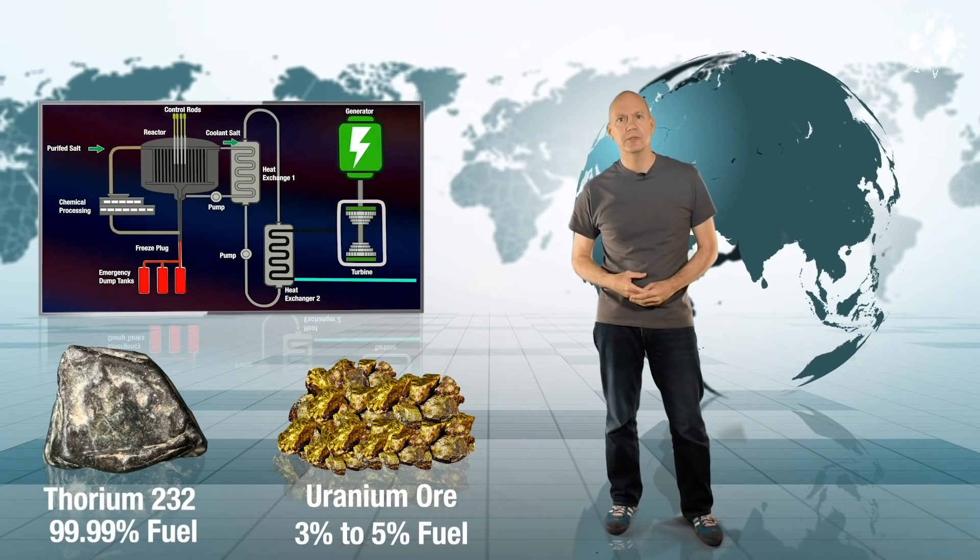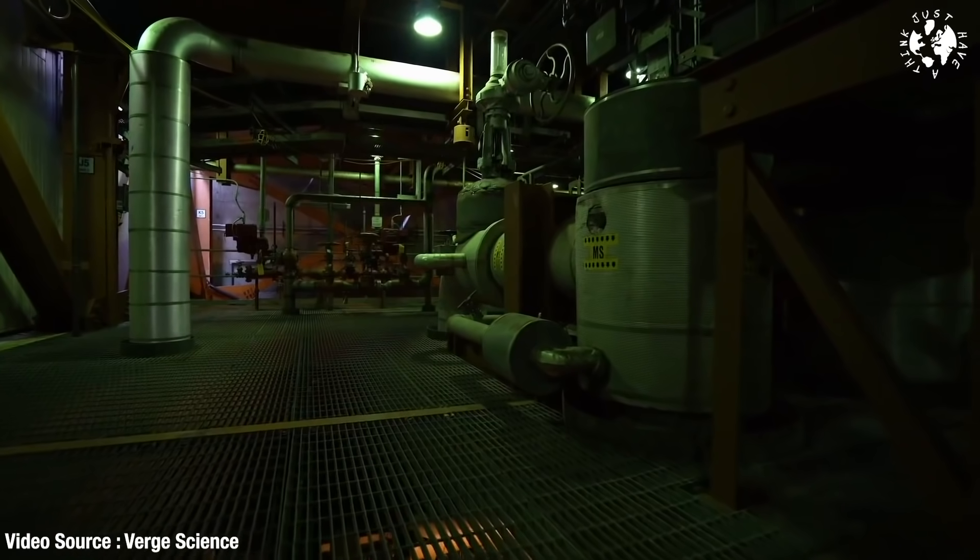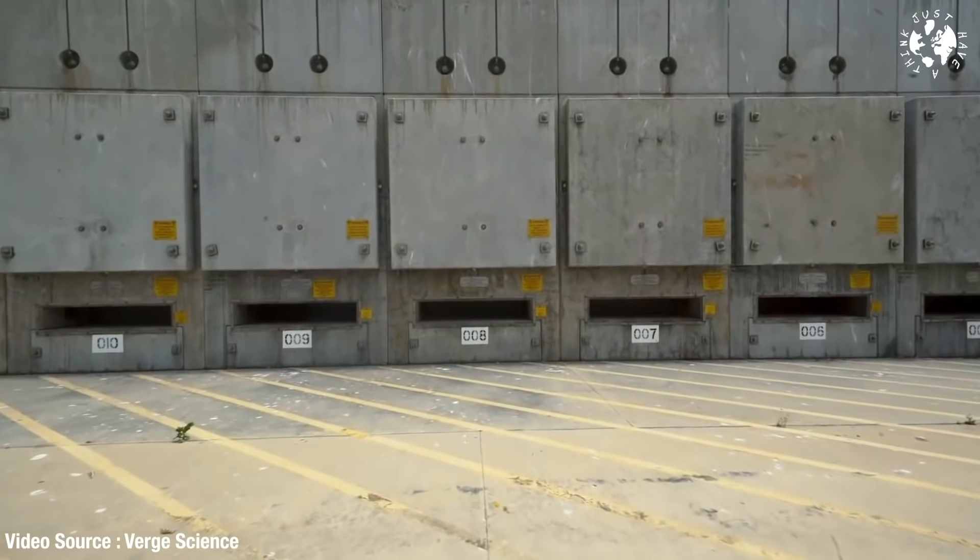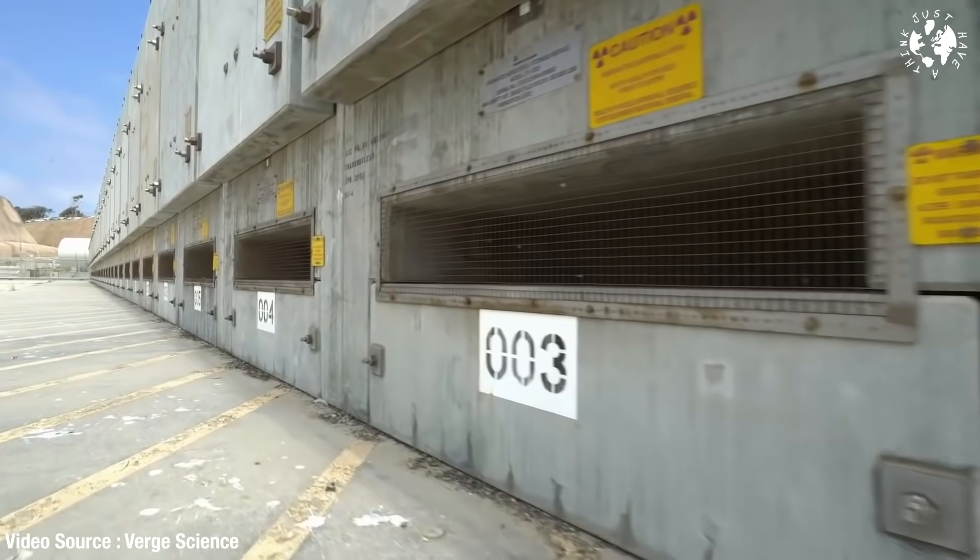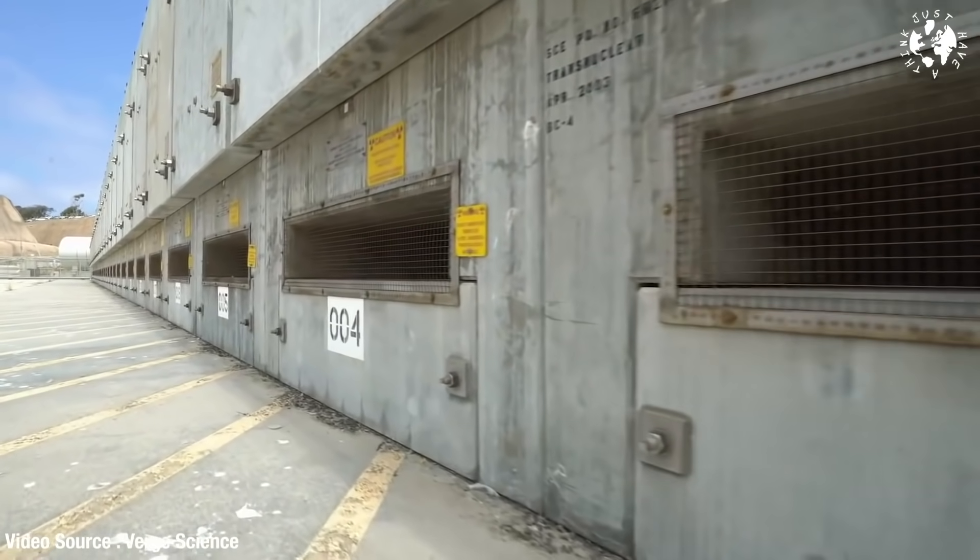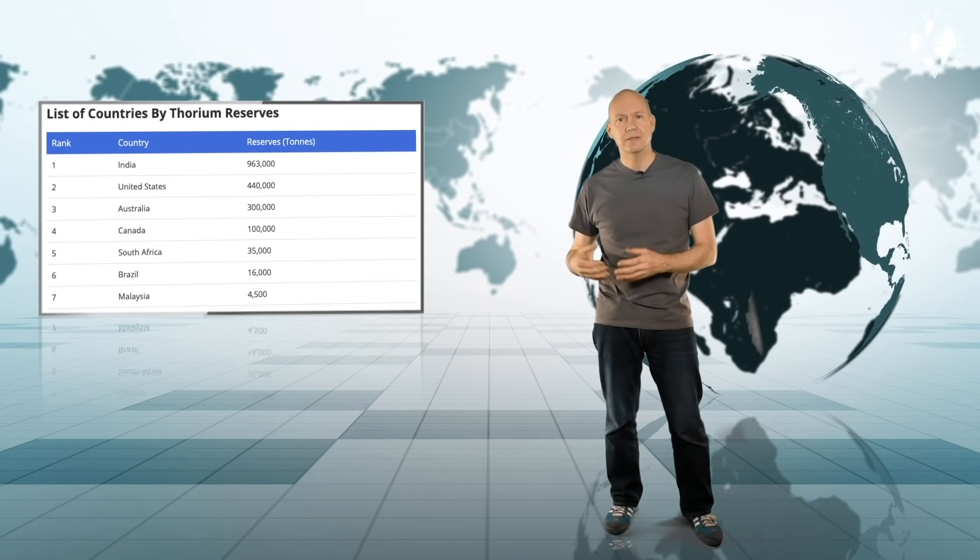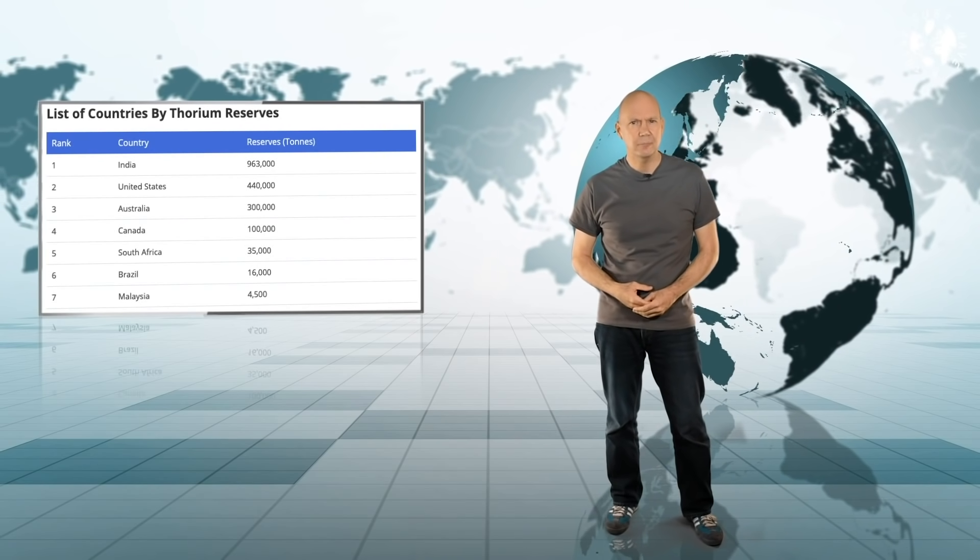A thorium-uranium cycle doesn't produce any of that rather inconvenient weapons-grade plutonium as a waste product either and although waste from thorium reactors is still very dangerously radioactive there's far less of it and it only stays radioactive for a few hundred years instead of tens of thousands. Thorium is also pretty abundant there's three times as much thorium in the earth's crust as there is uranium and it can be dug straight out of the ground in a pretty standard mining process.